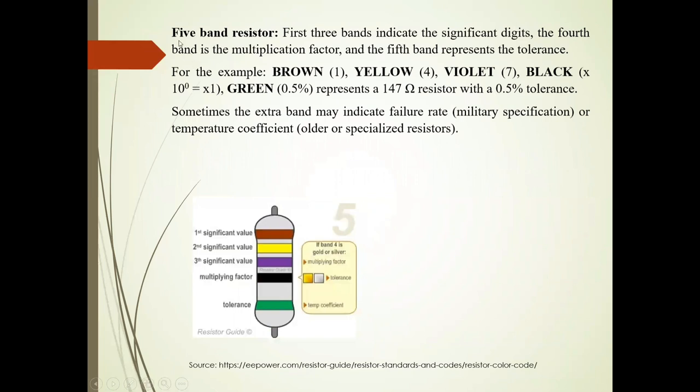Now we can take 5 band resistor. This resistor. So first 3 bands indicates significant digits. 4th band is multiplier. And 5th band represents tolerance.